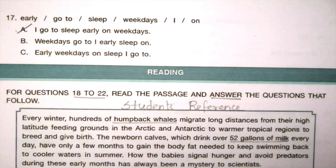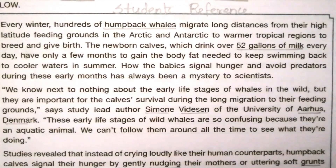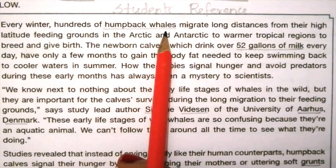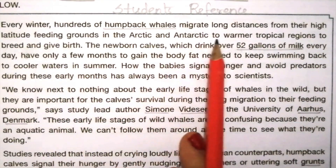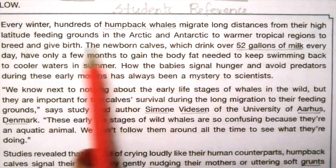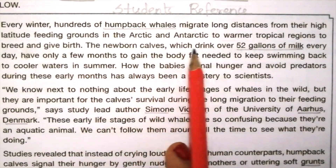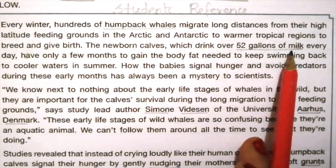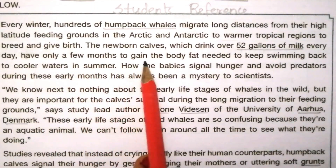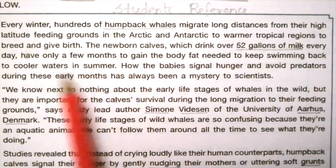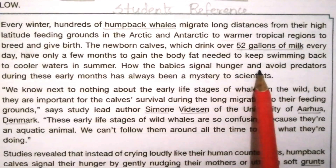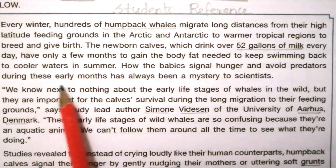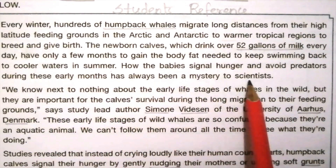For questions 18 to 22, read the passage and answer the questions. Every winter, hundreds of humpback whales migrate long distances from their high-latitude feeding grounds in the Arctic and Antarctic to warmer tropical regions to breed and give birth. The newborn calves, which drink over 52 gallons of milk every day, have only a few months to gain the body fat needed to keep swimming back to cooler waters in summer. How the babies signal hunger and avoid predators during these early months has always been a mystery to scientists.